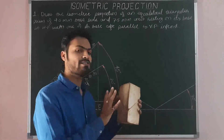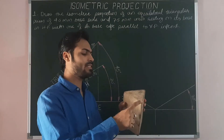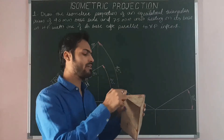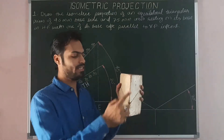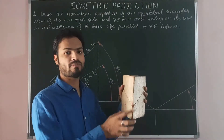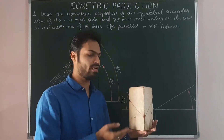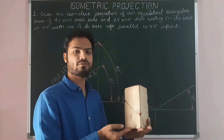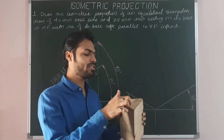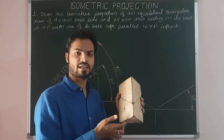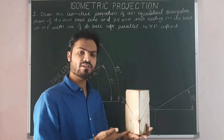As you can see, it is a triangular prism. The length of the base edge is 40mm, 40, 40, and the axis length is 75mm long. In total, 5 faces are there in this solid: 1, 2, 3, 4th, and 5th. Out of which, the two triangular faces are the bases of the solid — top base and bottom base.